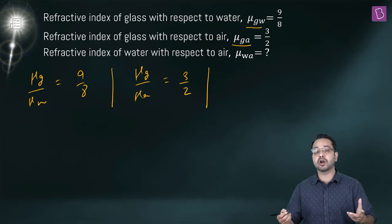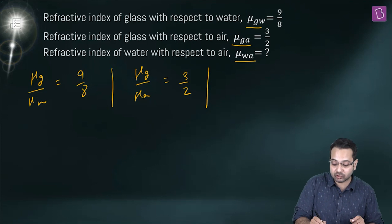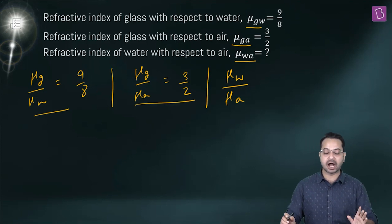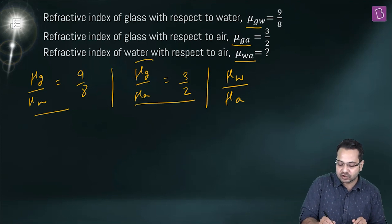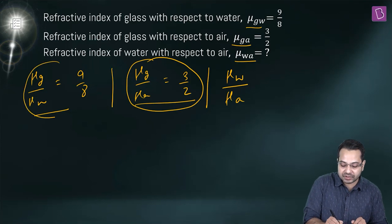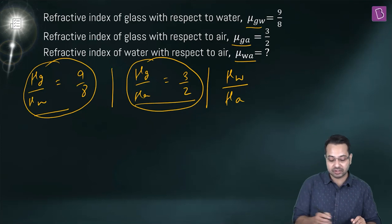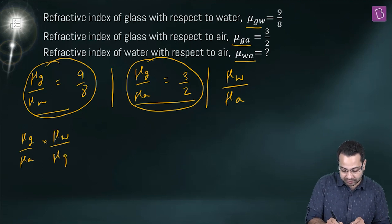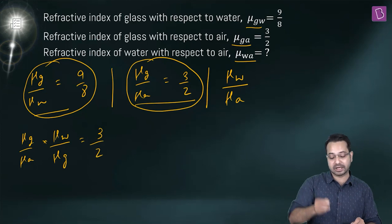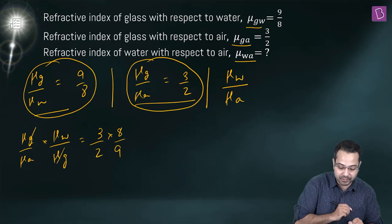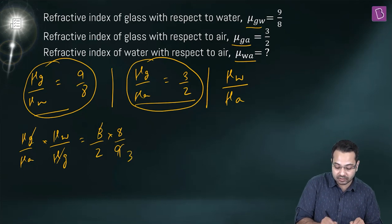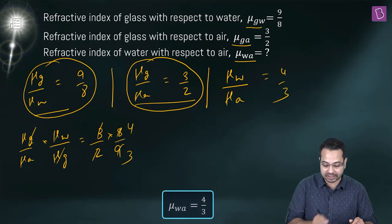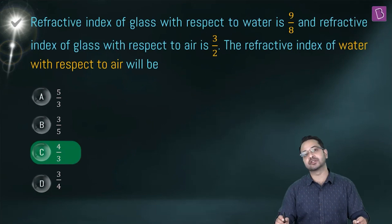We want μ_water/μ_air. Dividing the equation μ_glass/μ_air = 3/2 by μ_glass/μ_water = 9/8: this gives (μ_glass/μ_air) × (μ_water/μ_glass) = (3/2) × (8/9). The μ_glass cancels, leaving μ_water/μ_air = 24/18 = 4/3. So the refractive index of water with respect to air is 4/3, and option C is correct.